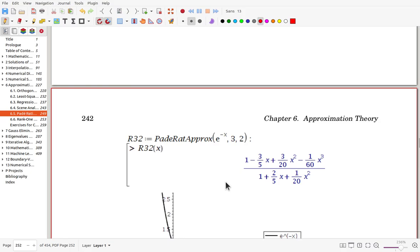Here, the output of the function for e to the minus x, and 3 and 2, and we have that one.